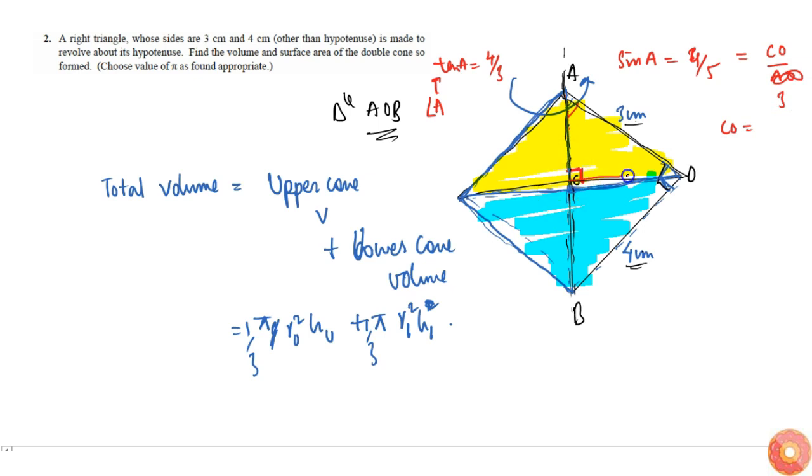That is equal to CO, which is radius of the two cones. Two cones have a mutual radius part since it's rotating like this. Imagine this is the base of the first cone like this and the base of the upper cone also.